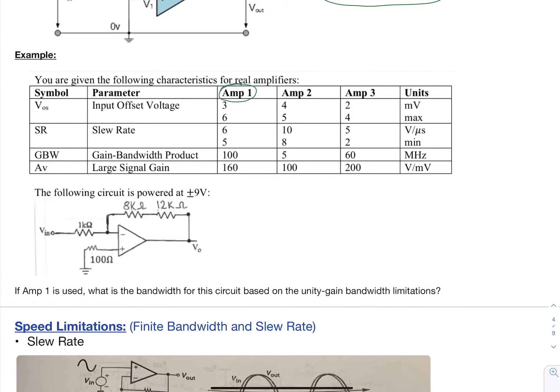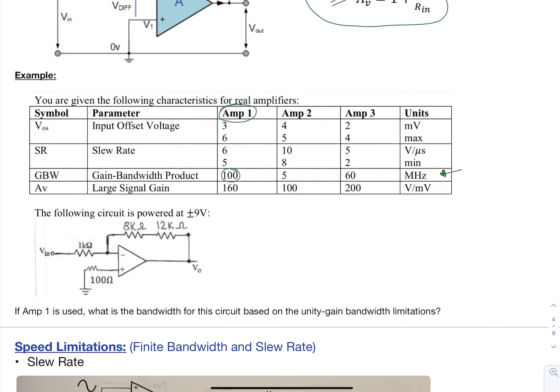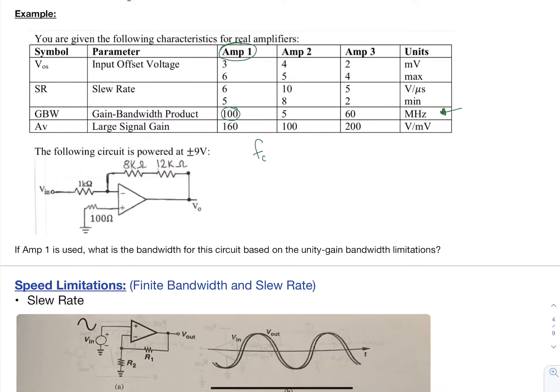So as an example, in this case, we want to use amp one. We want to find the bandwidth for the circuit based on the unity gain bandwidth limitations. So the unity gain values are given here. So in this case, it's 100 in megahertz. So we're going to use this gain bandwidth product. And we want to find this bandwidth, which will be our frequency. So F of C for that critical frequency is equal to 100 meg over, in this case, it will be, remember the ideal gain was 20. And so the non-inverting gain is going to be 21. So we're going to use that 21 for more accuracy. And that gives us 4.76 megahertz is our bandwidth.